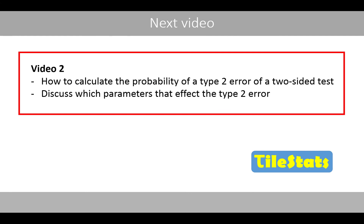So this was the end of the first video. In the second video, we'll see how we can calculate the probability of a type 2 error for a two-sided test. We will also discuss which parameters affect the type 2 error. See you in the second part.